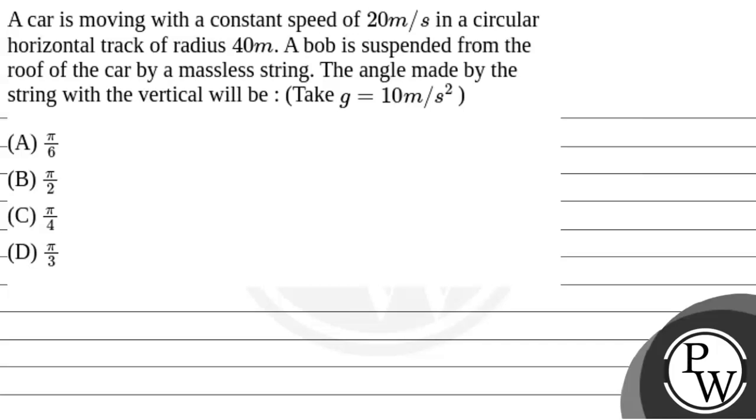Hello Bacho! Let's read the question. The question says that a car is moving with a constant speed of 20 meters per second in a circular horizontal track of radius 40 meters. A bob is suspended from the roof of the car by a massless string. The angle made by the string with the vertical will be - take g equal to 10 meters per second squared.